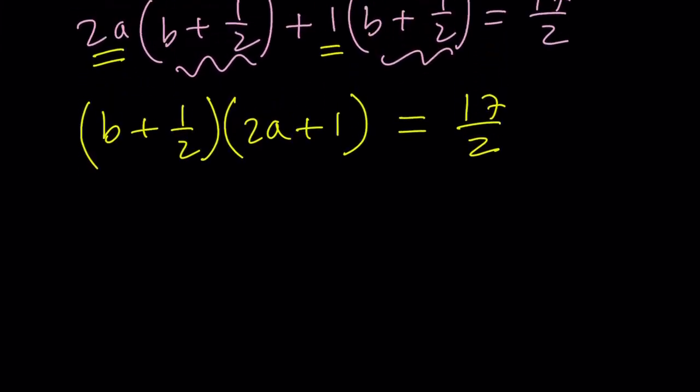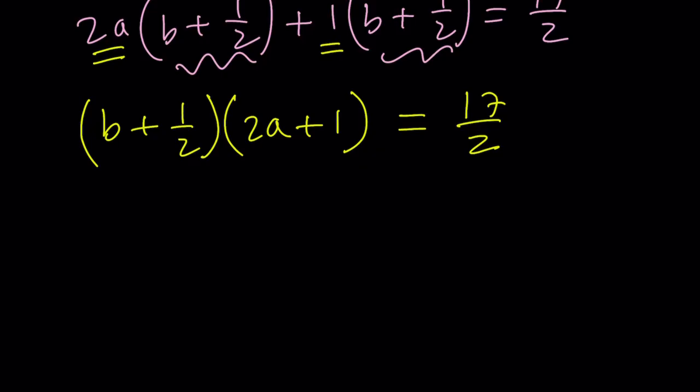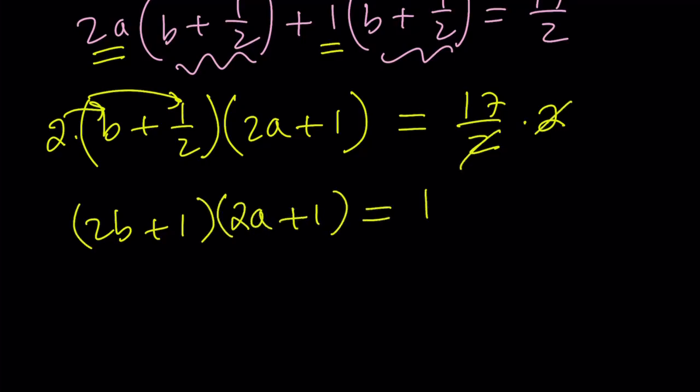Let's go ahead and multiply both sides by 2. The presence of a fraction on the right-hand side also gives you a clue. Multiplying both sides by 2 is a good idea. And if you go ahead and distribute the 2 here, you get 2b plus 1 multiplied by 2a plus 1 equals 17. As you should know, 17 is a prime number.